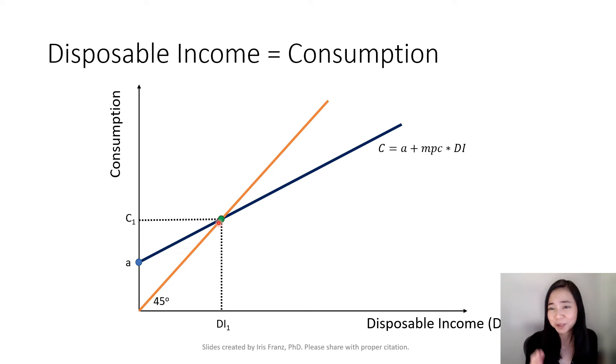How so? That's the definition of the 45-degree line. When you're on the 45-degree line, the distance here is equal to the distance here. Therefore, your disposable income is exactly equal to your consumption. Your DI1 is equal to C1.